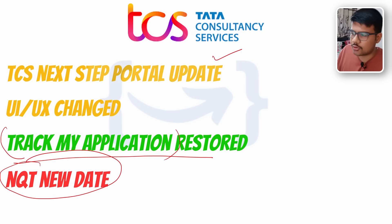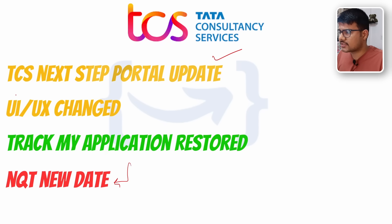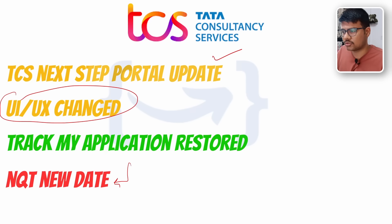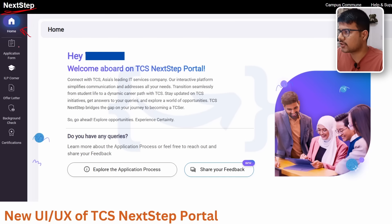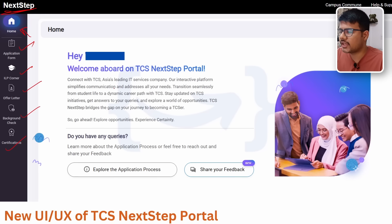We'll also talk about new TCS NQT examination data for those who missed the NQT exam or have not appeared yet, and cover some basics of the UI/UX change — what has actually happened and when you can expect the next phase responses. This is the new UI/UX updated by TCS. You can see this is the NextStep portal up here — there's a Home button, then Application Form, ILP Corner, OPAL, Header, Background Check, and Certification. Before, it was a very old UI, but now this is a quality UI.